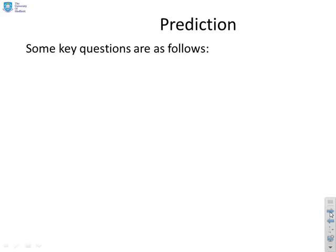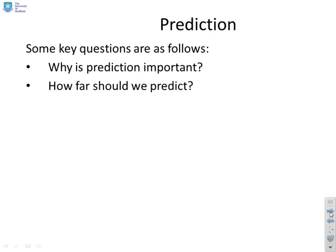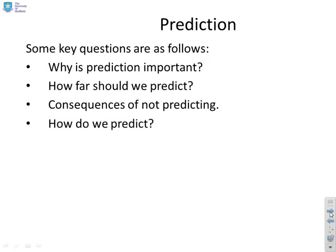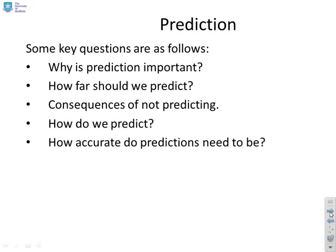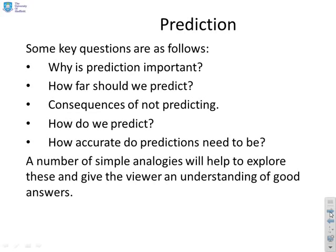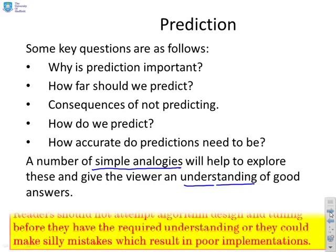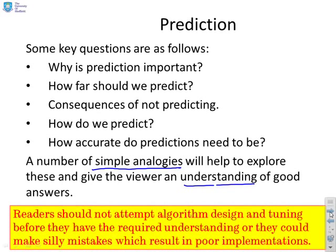Let's do each component in turn, starting with prediction. Some key questions to ask are: Why is prediction important — which was covered in the first video. How far should we predict? What are the consequences of not predicting? How do we actually go about prediction? And how accurate do predictions need to be? We're going to use some simple analogies to help explore these questions and give you an understanding of what might be good or appropriate answers. You shouldn't attempt a predictive control design until you properly understand answers to questions like these.